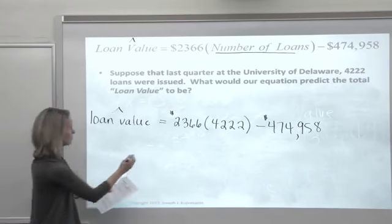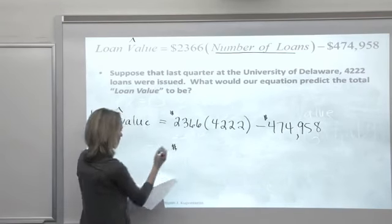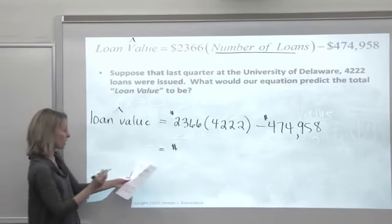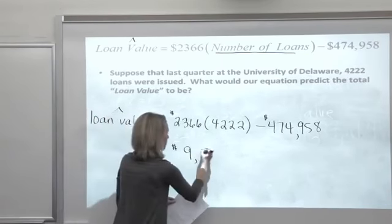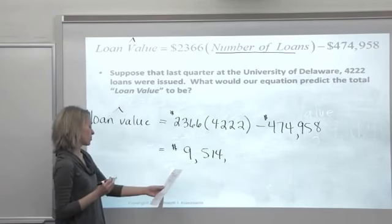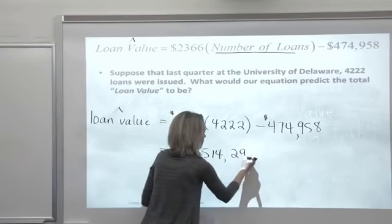If you type that in your calculator, we get that the model predicts a loan value for University of Delaware of $9,514,294.